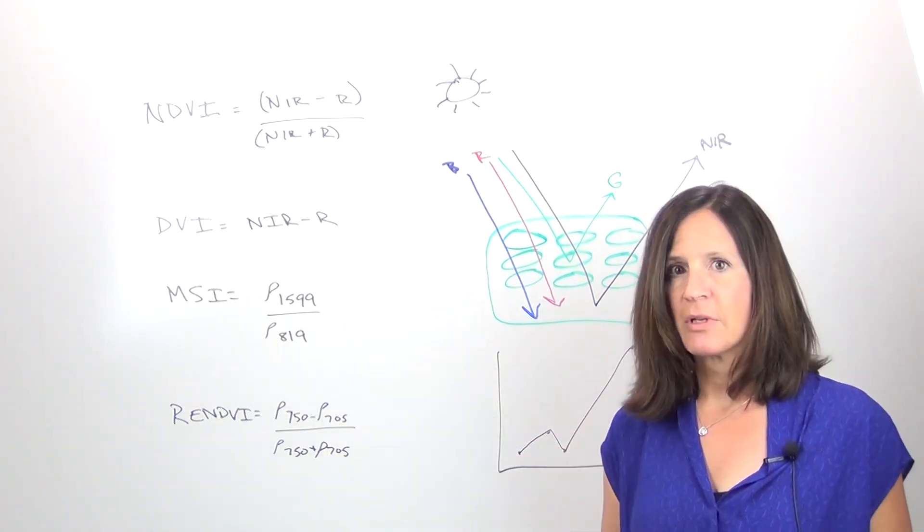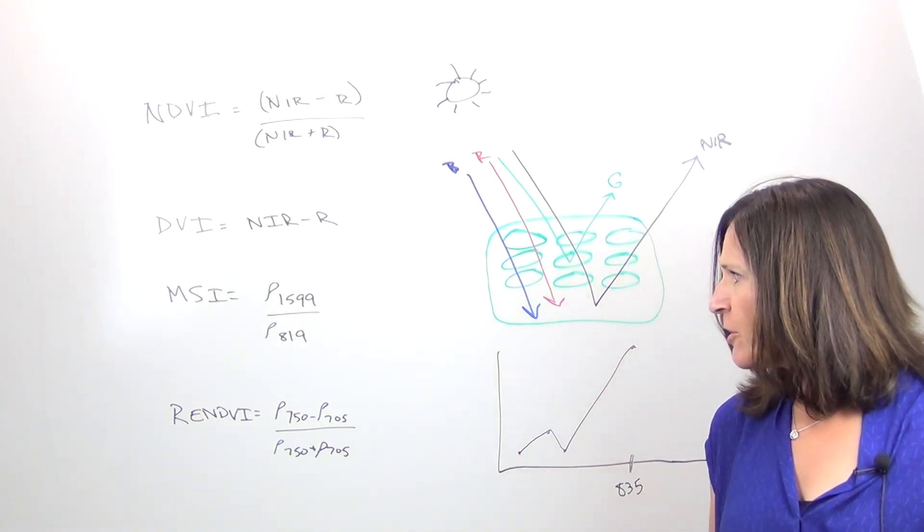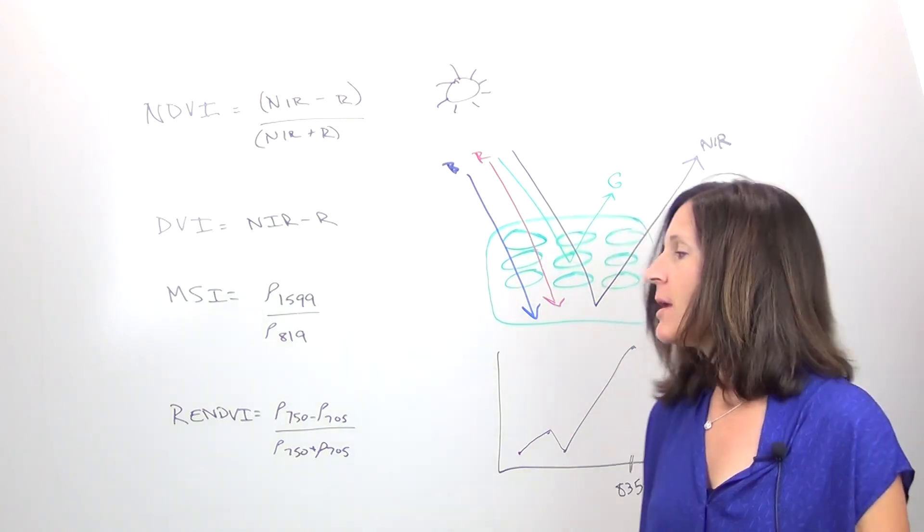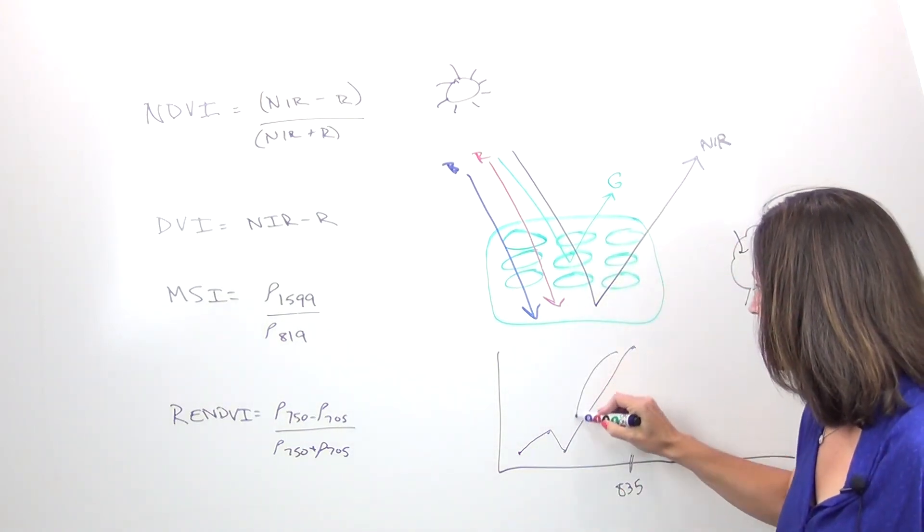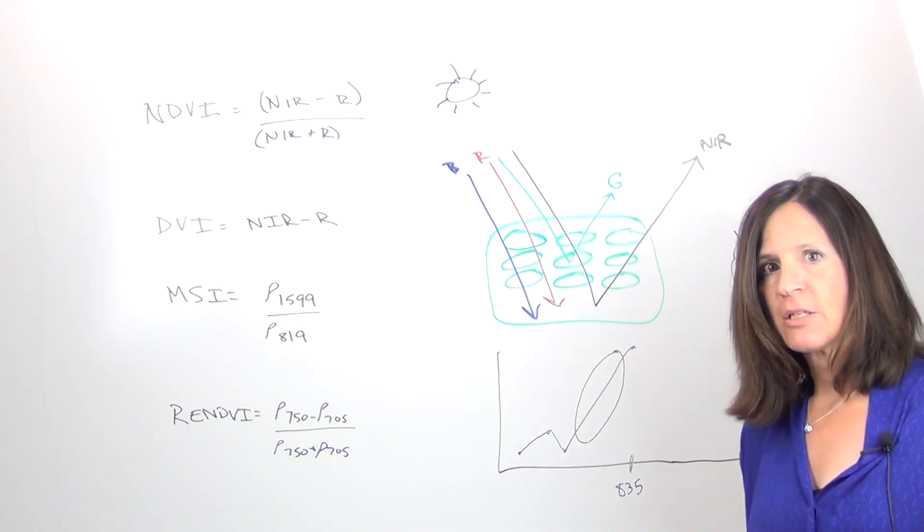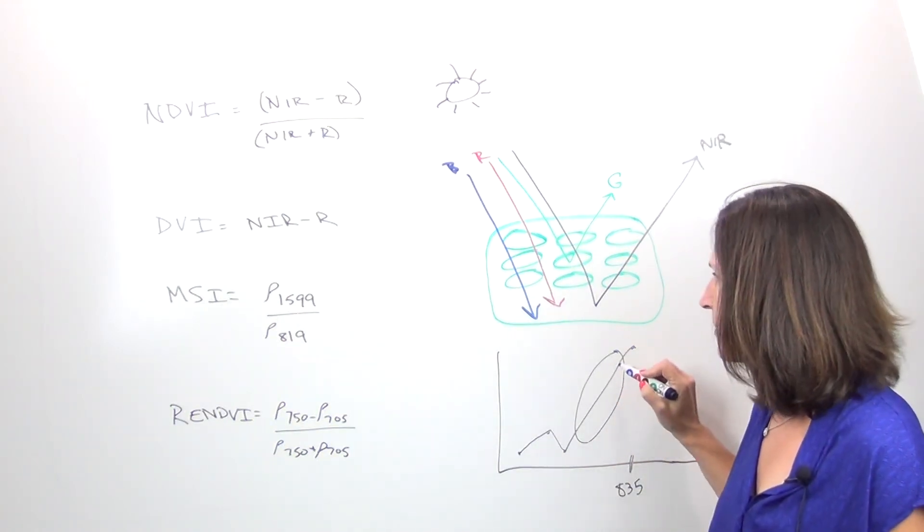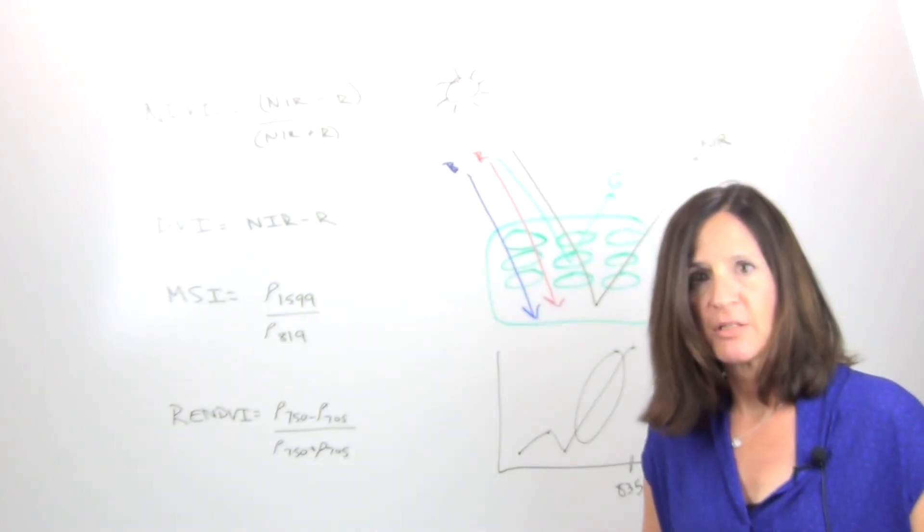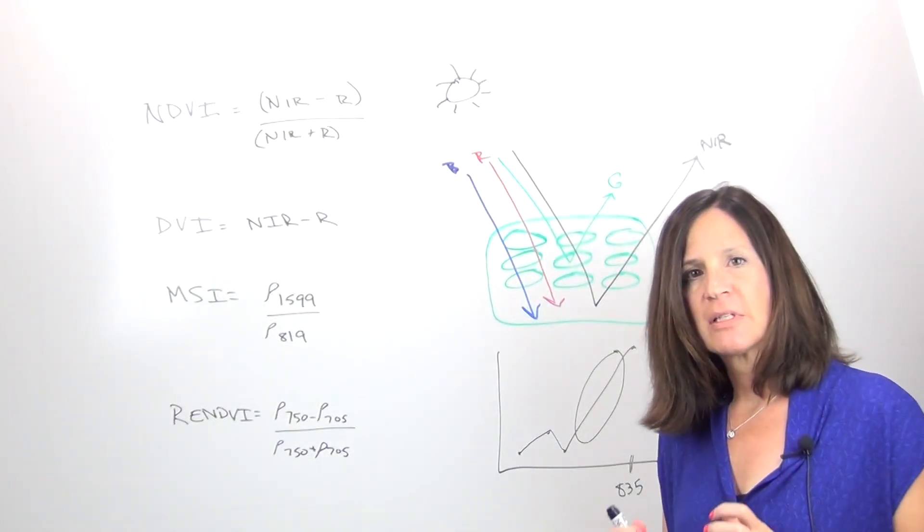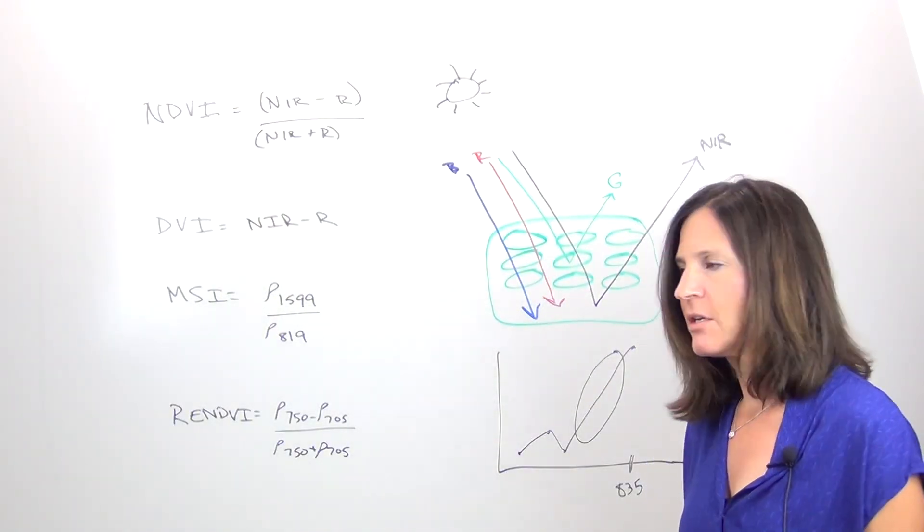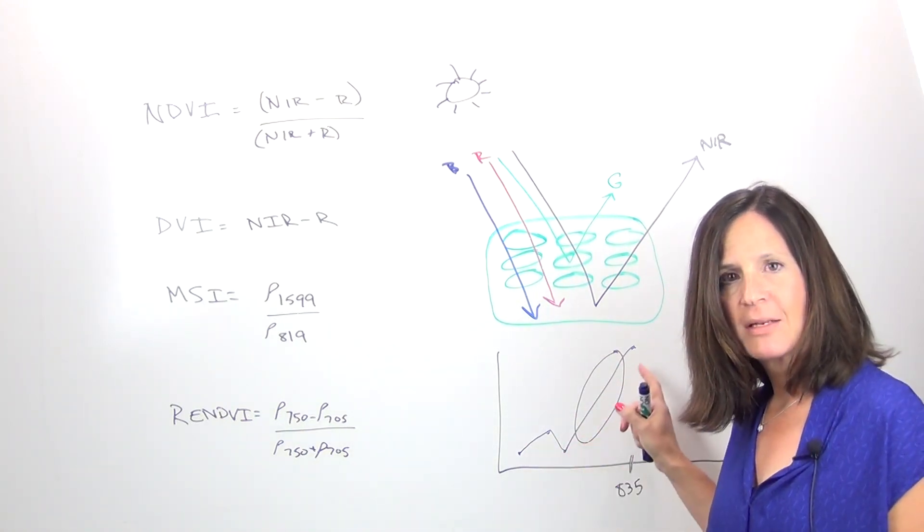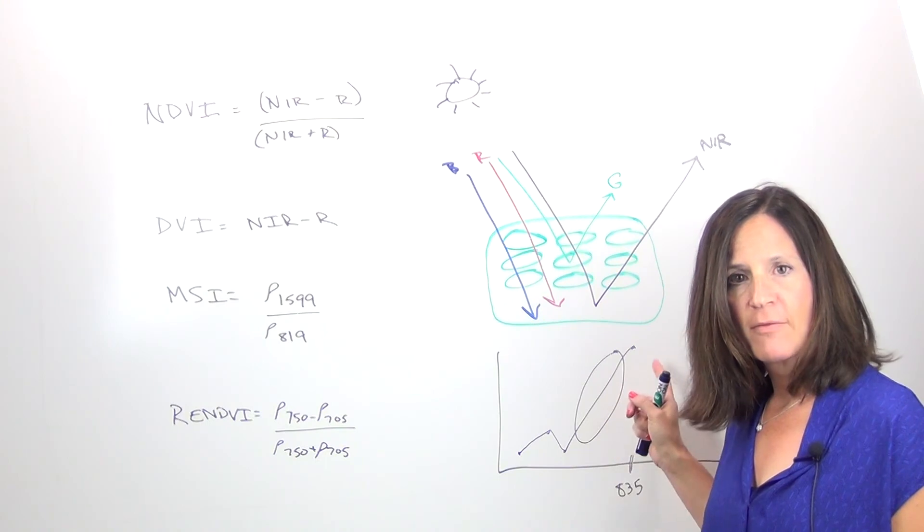The RENDVI, or the red edge NDVI, utilizes information here. So if your sensor actually has information along the red edge, it's great for applications like precision agriculture because you can really start to see very small scale changes in the vegetation that are indicated in between the near infrared and red spectral signatures of your plant.